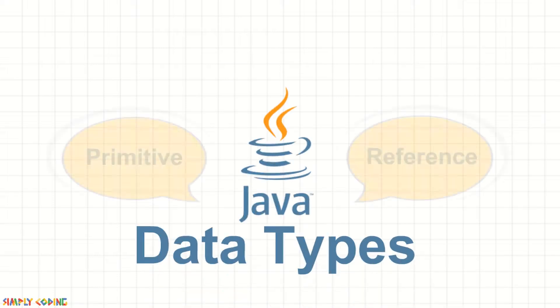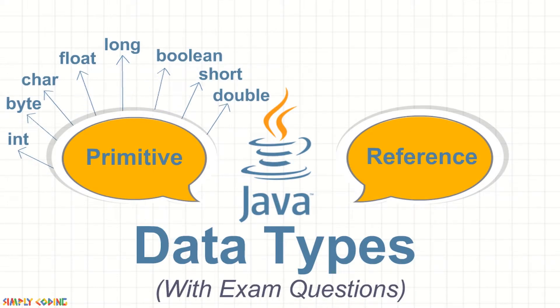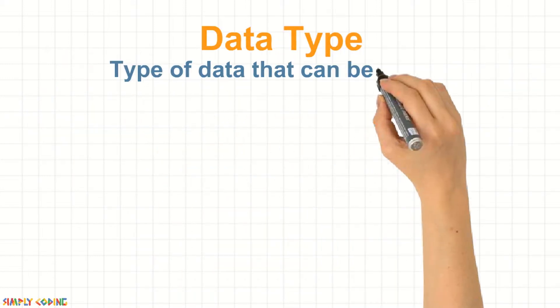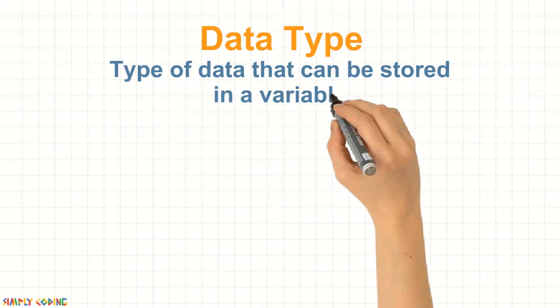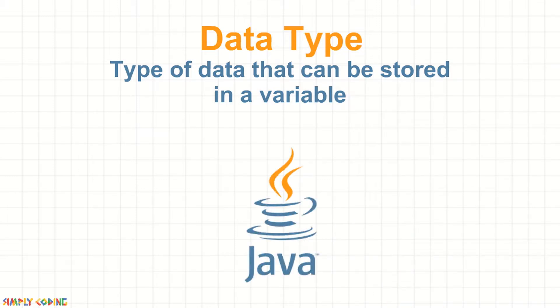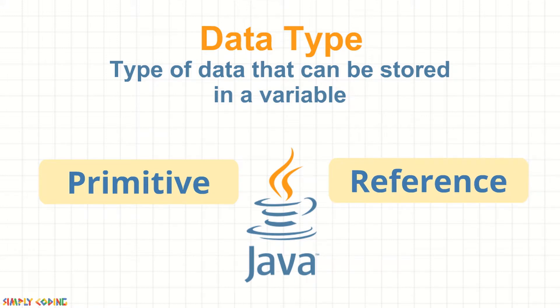Hello, in this video, we will learn more about Java data types. Data type refers to the type of data that can be stored in a variable. Java has two data types: one is primitive and the other is reference data type.